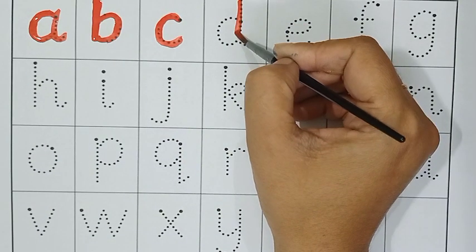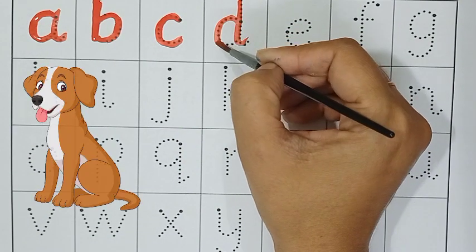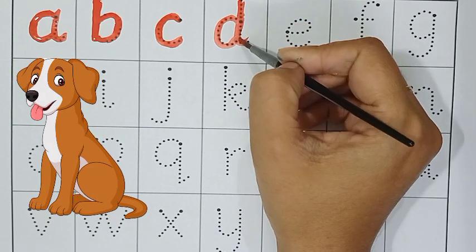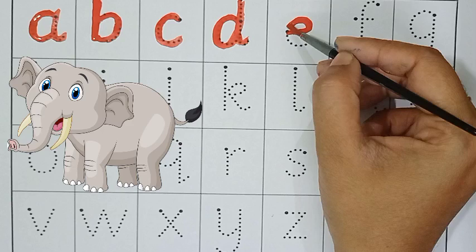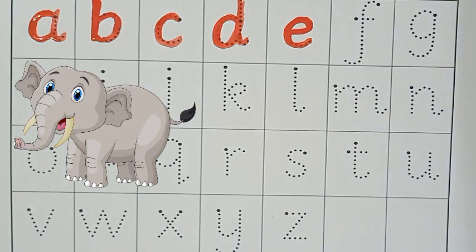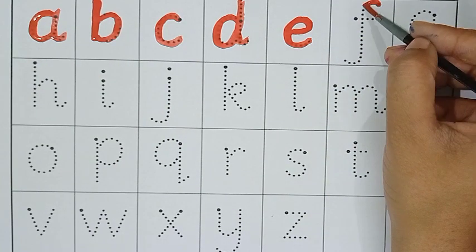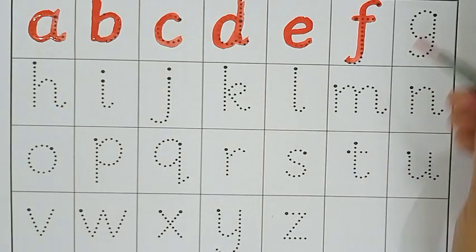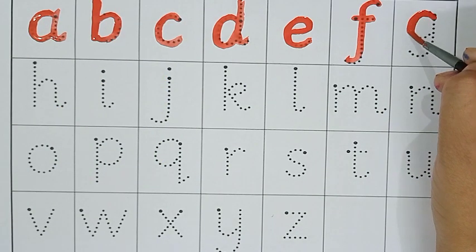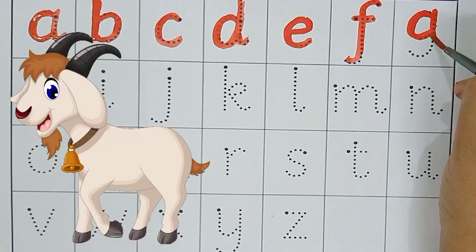D, D for dog. E, E for elephant. F, F for peace. D, D for goat.